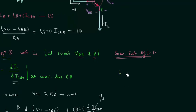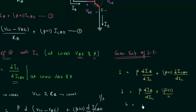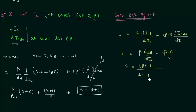Differentiating, we have 1 on the left-hand side, then β·(dIB/dIC) plus (β+1) as constant and dICBO/dIC. Since dICBO/dIC equals 1/S, we have 1 = β·(dIB/dIC) + (β+1)/S. Simplifying, the stability factor S equals (β+1) divided by (1 minus β·dIB/dIC). This is the generalized form of the stability factor, usable for any biasing scheme.